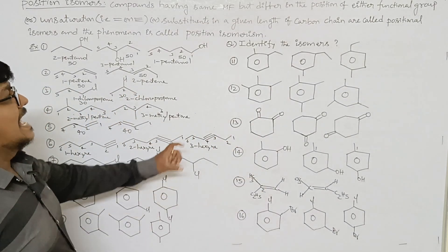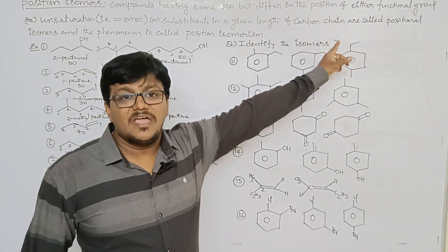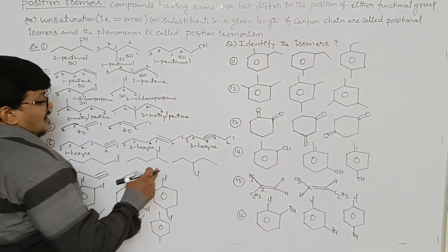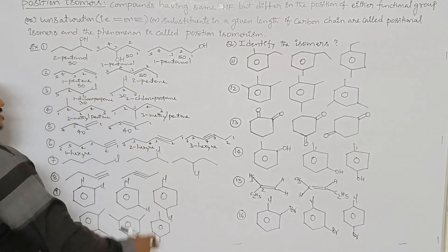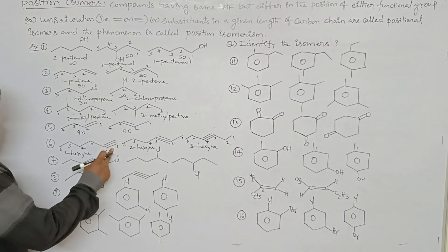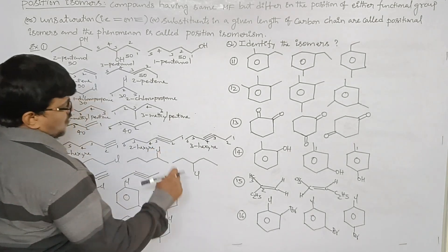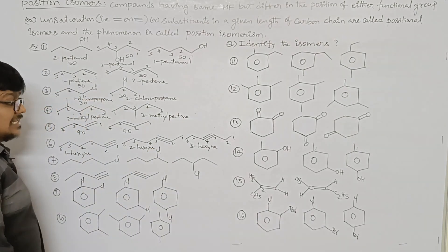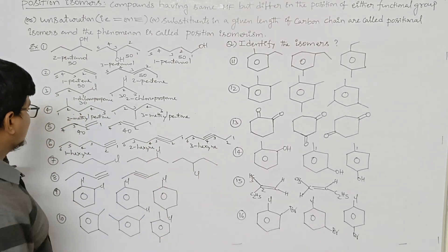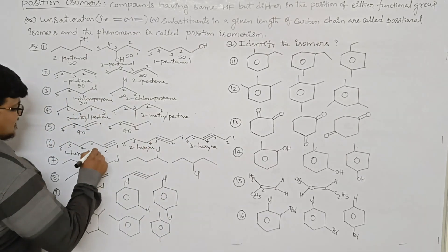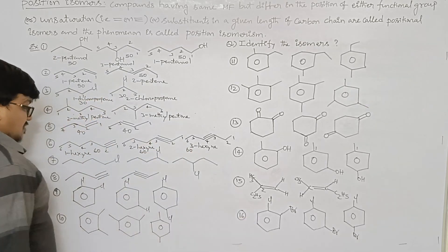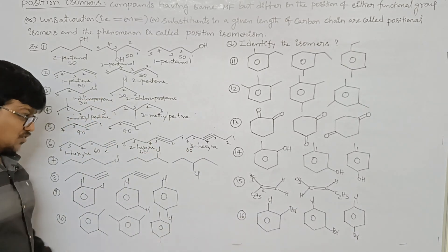All three compounds have the same length of the parent chain. The difference is the position of unsaturation — meaning the triple bond position. In the first compound, the triple bond is at the first position; in the second compound, at the second position; in the third compound, at the third position. All have isomeric number 60. Since the isomeric number is the same and only the position differs, these three are positional isomers.